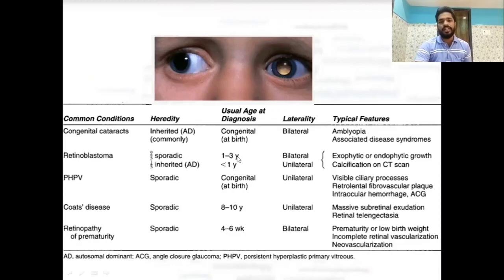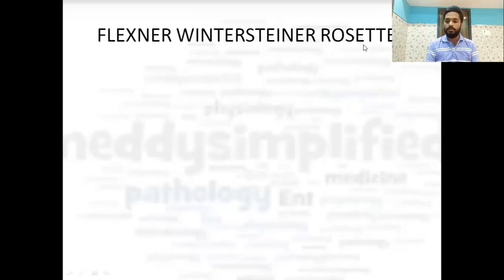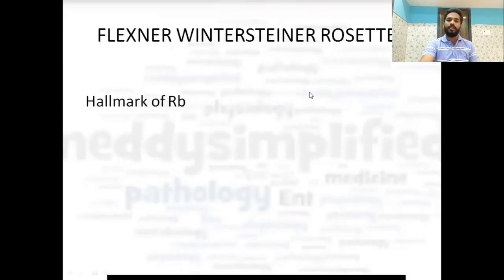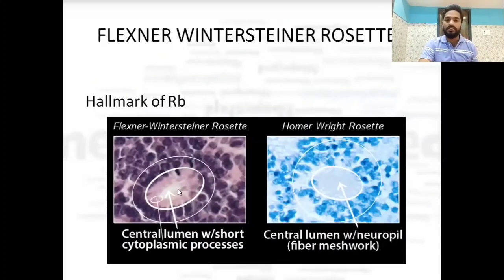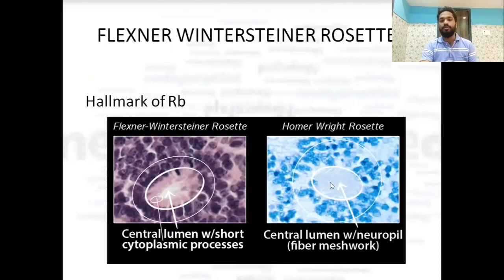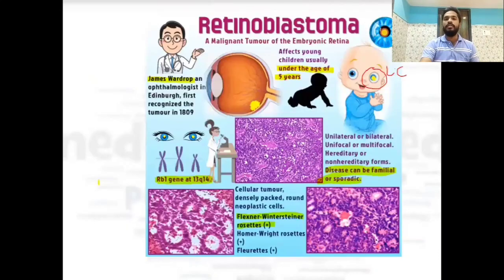Flexner-Wintersteiner rosette is a hallmark of retinoblastoma. It has a central lumen with short cytoplasmic processes. In comparison, Homer-Wright rosette has a central lumen with neutrophilic fiber mesh. This is how both rosettes look.